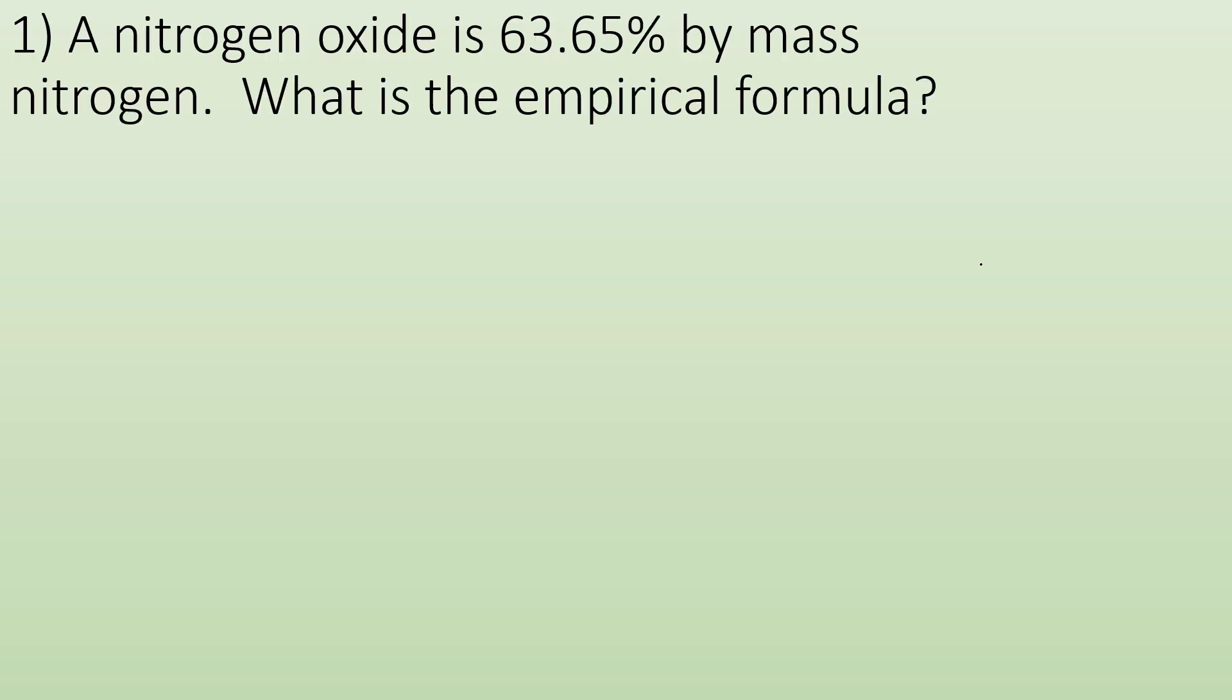So number one, a nitrogen oxide is 63.65% by mass nitrogen. What is the empirical formula? So it's saying we have a nitrogen oxide and they don't know in what proportion those things are. But they do know 63.65% of it is nitrogen by mass. So whenever you're dealing with percents, it's nice to make assumptions. Like let's say we had 100 grams.